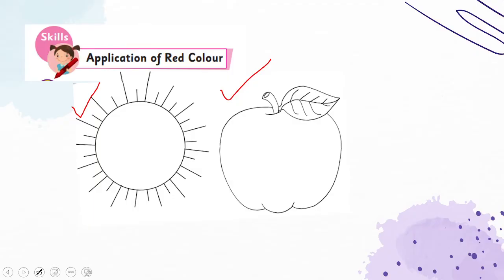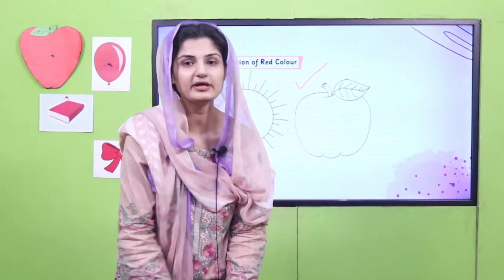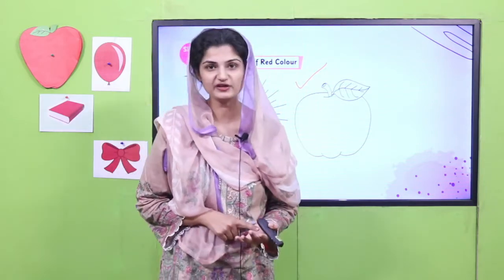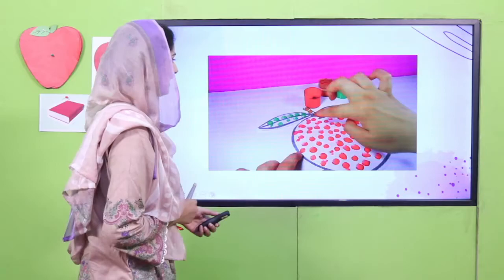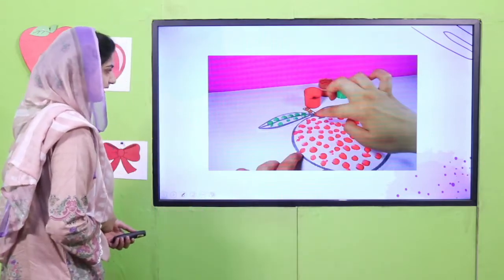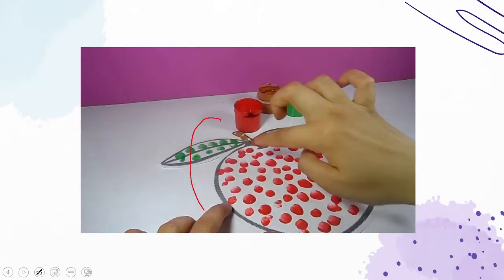Now pause your video — I'm waiting for you to come back. Okay playgroups, I hope you have already painted your apple with your finger. Now look at the end result — how does it look? It must look like this. This is how you put your finger with the red paint onto the apple.